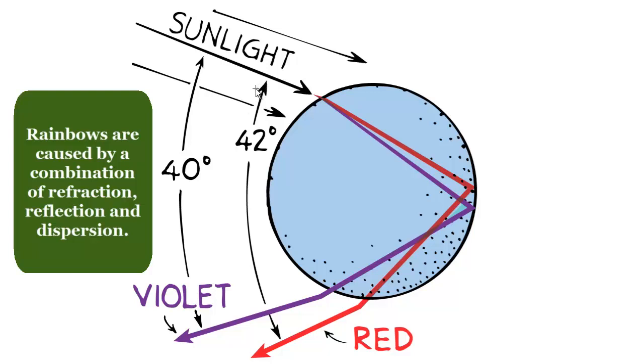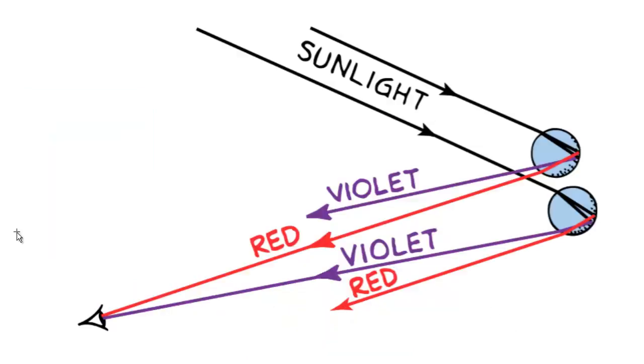The angle from the incoming sunlight is different for violet and red. For violet it's 40 degrees, for red it's 42 degrees. You'd think that since red light comes out on the bottom and violet's on top from this raindrop that you'd see the rainbow with violet on top and red on the bottom.